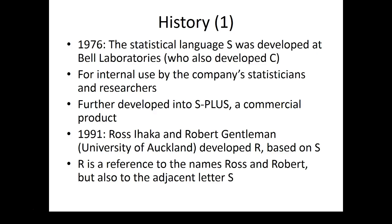Later on, S was developed into S-Plus, a commercial product that is still on the market. It may seem odd that there is one commercially available paid software and one that is free with basically the same functionality, but apparently there are markets for both. In 1991, Ross Ihaka and Robert Gentleman at the University of Auckland decided to develop a statistical environment based on S, and the result was R — named after Ross and Robert, and also because R is the letter adjacent to S in the alphabet.